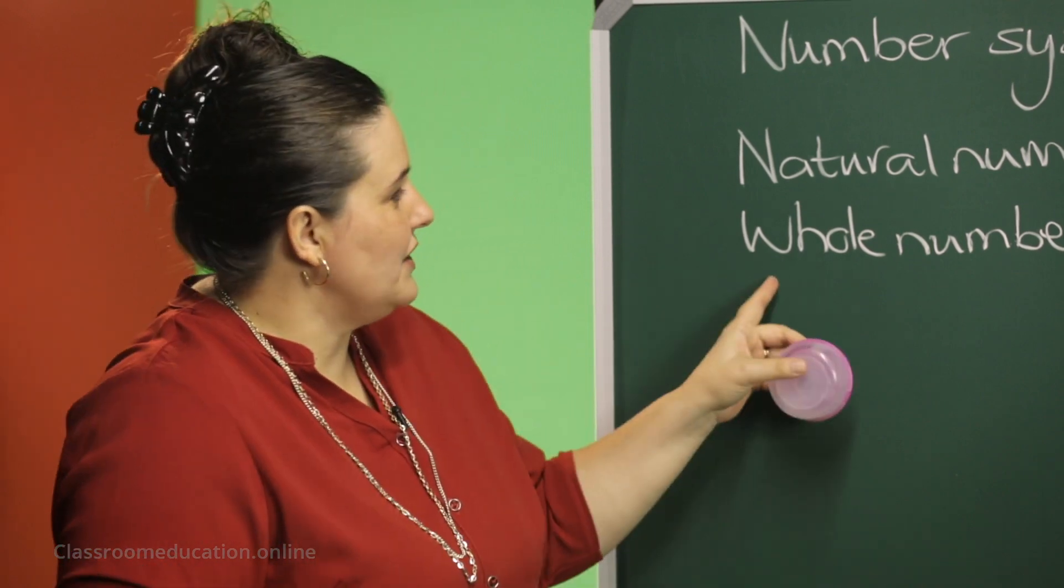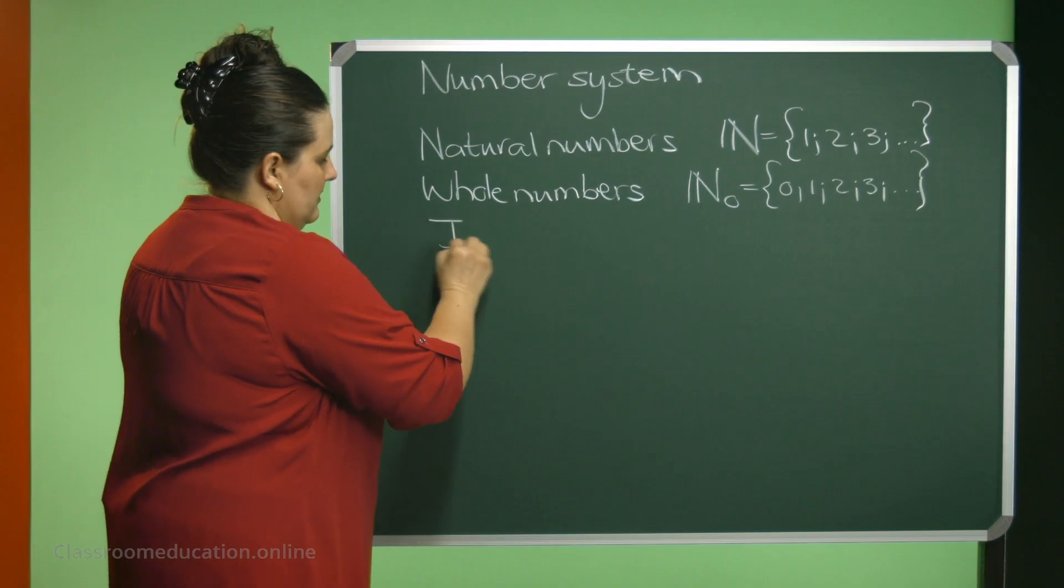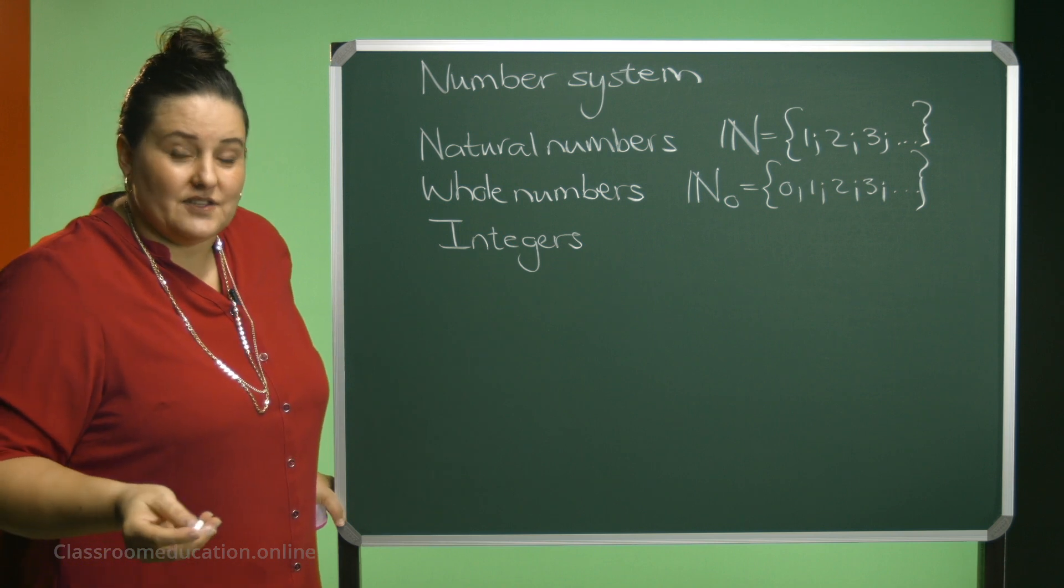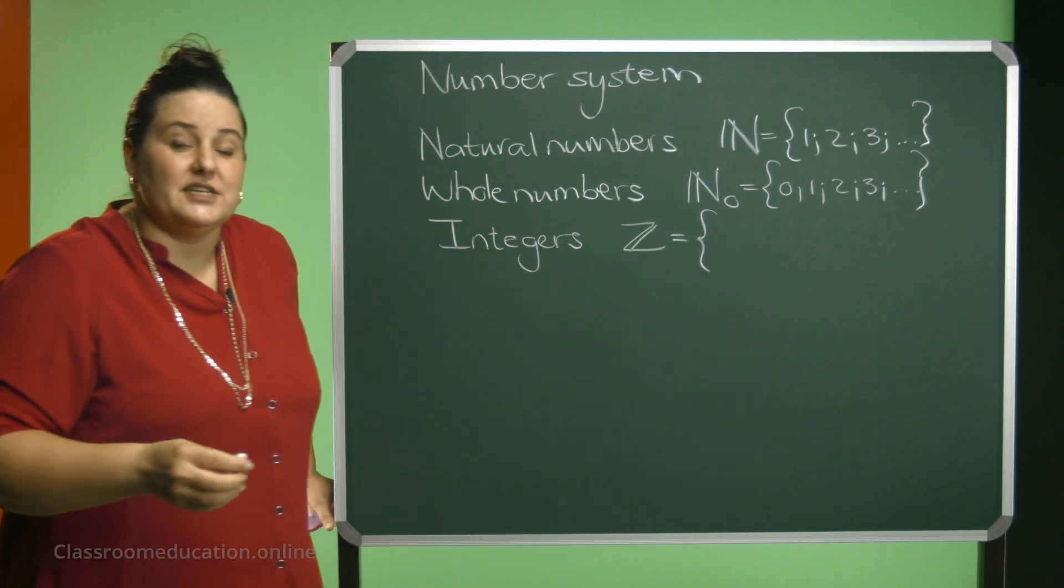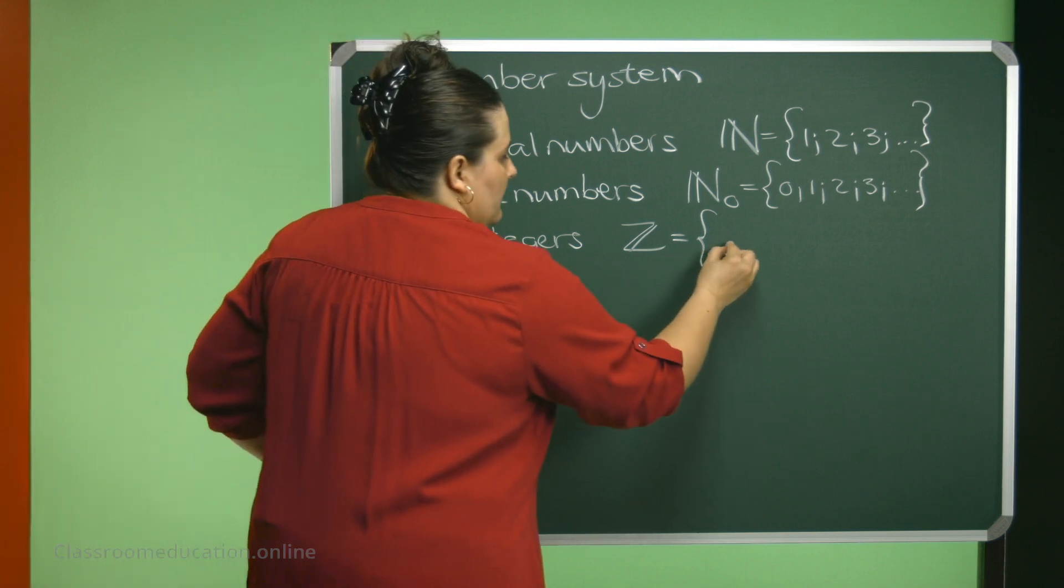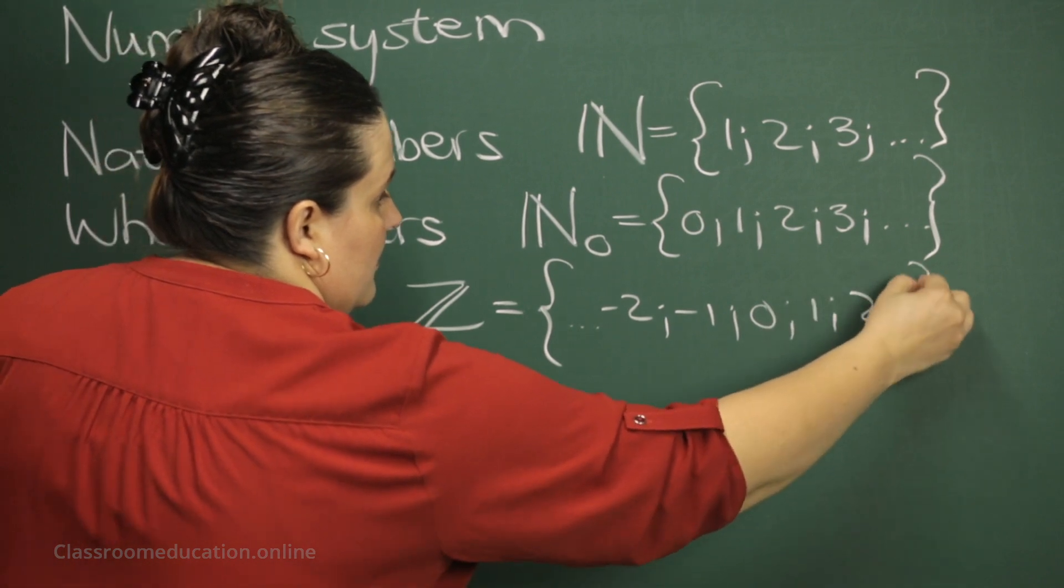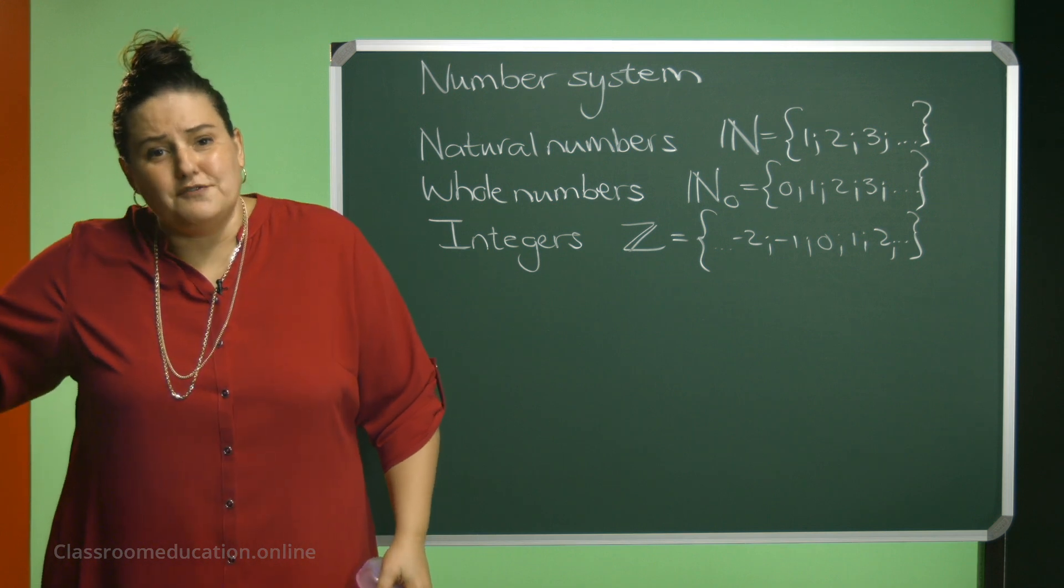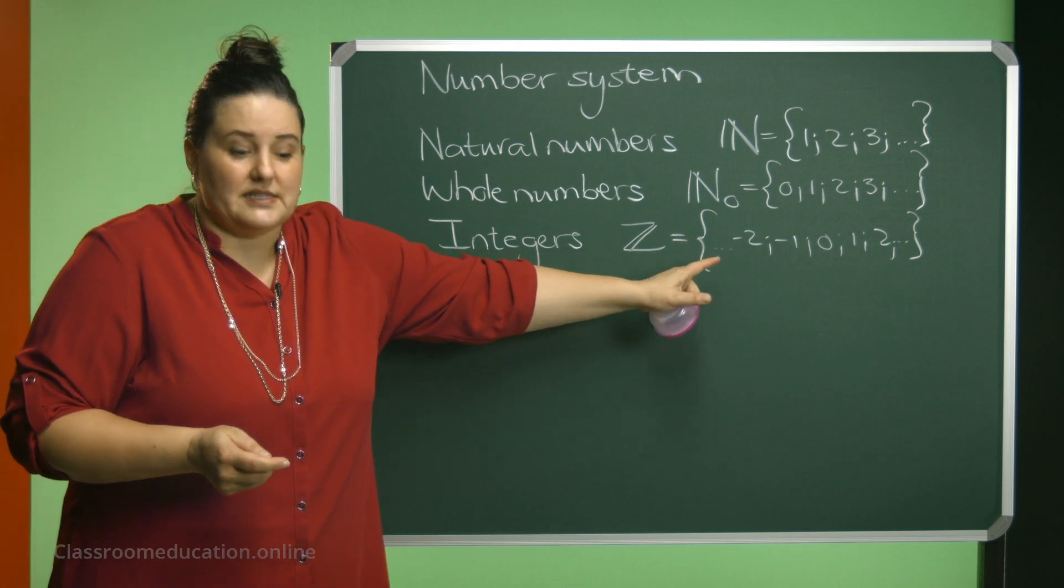Our third type of numbers that we get are integers. Integers, the symbol for that is a Z. And integers are positive and negative numbers, but no decimals. So they will go from minus infinity up to infinity, but it's only the numbers without decimals.